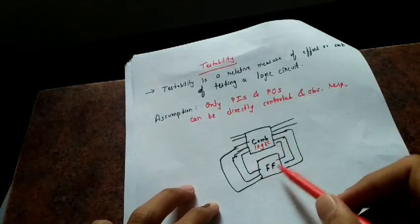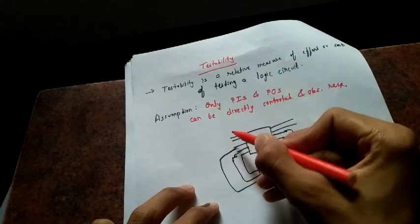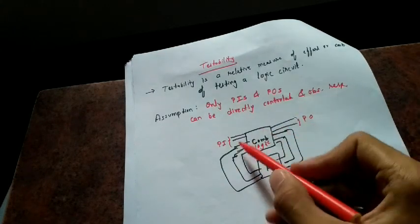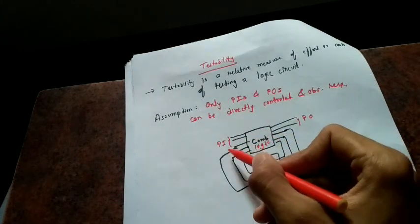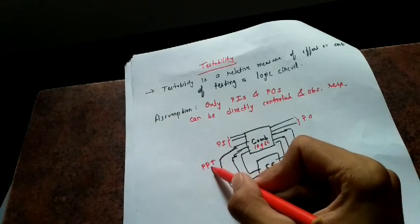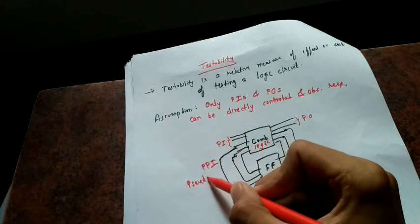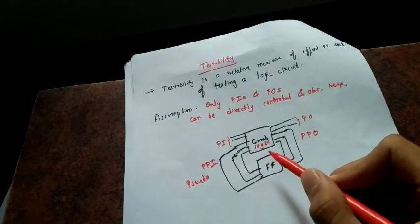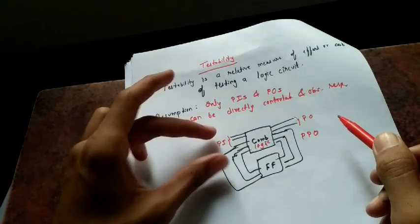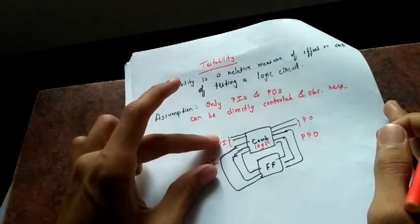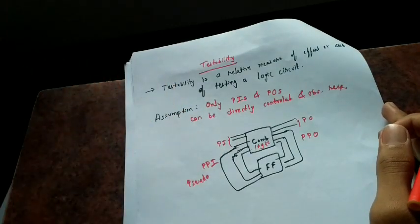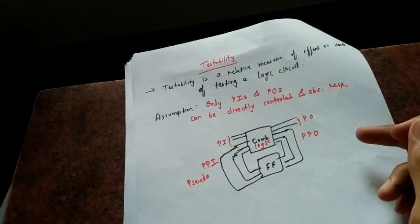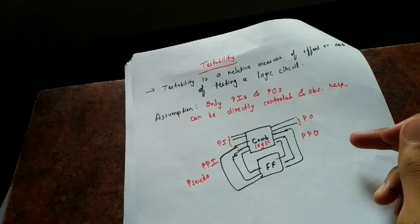Consider a circuit with some combinational logic and a feedback memory element — let's say a flip-flop. The external inputs are called primary inputs and the final outputs are called primary outputs. The inputs and outputs of the memory element are called pseudo-primary inputs.